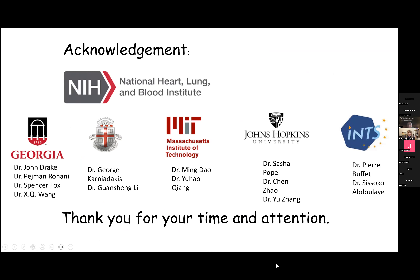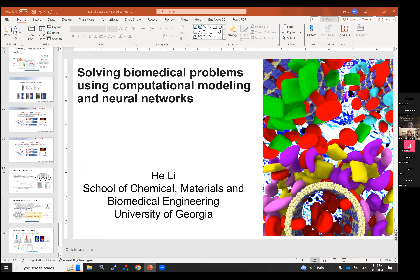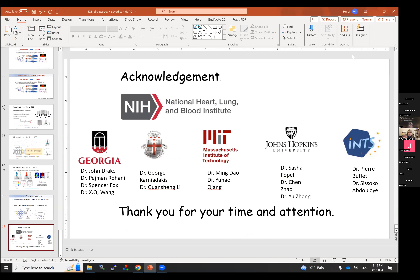Thank you so much. If you want to ask a question, raise your hand in Zoom. First question from Leandro: what is the smallest channel a red blood cell can travel through? Based on my knowledge, it's a two to three micron channel. But if it's a slit like in the spleen, it can be even smaller — down to about 0.5 microns.